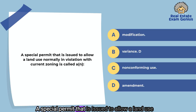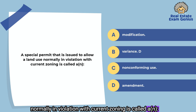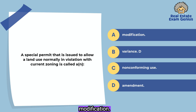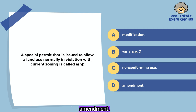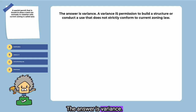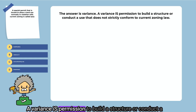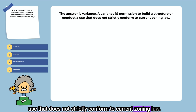A special permit that is issued to allow a land use normally in violation of current zoning is called a: modification, variance, nonconforming use, or amendment. The answer is variance. A variance is permission to build a structure or conduct a use that does not strictly conform to current zoning law.